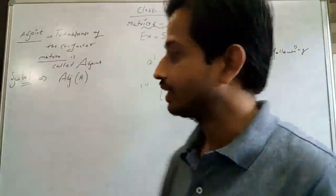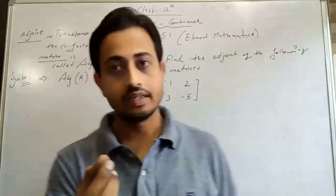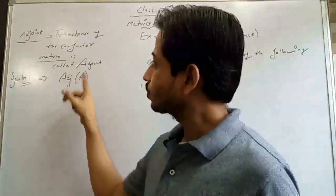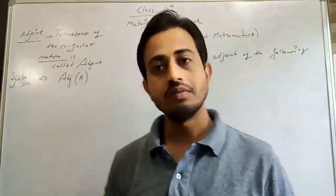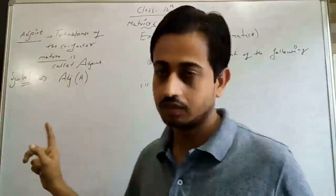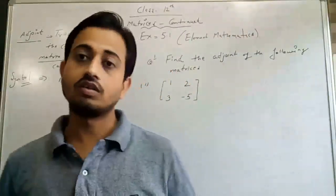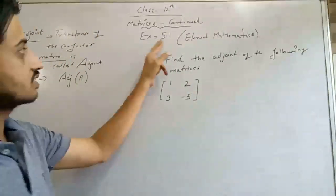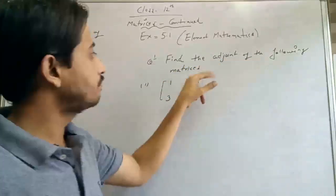Adjoint is written in notation as Adj(A), where A is the name of the given matrix. You write it inside close brackets. This is the notation for Adjoint. Our first concept is Adjoint, so I am taking the first question from Exercise 5.1 of Elementary Mathematics: find the Adjoint of the following matrices.